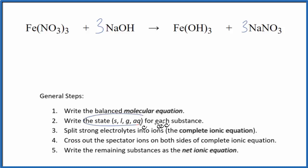Next, we write the state for each substance. So for iron 3 nitrate, nitrates are very soluble if you know your solubility rules. We're going to write a little AQ right there. That's aqueous. This will dissolve, dissociate into its ions.